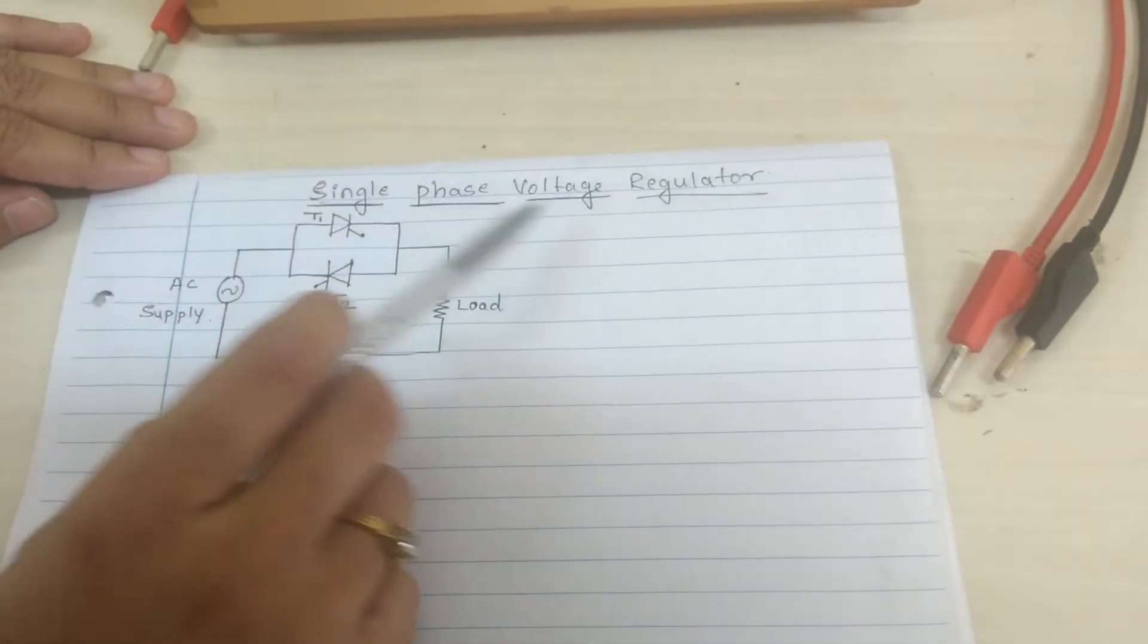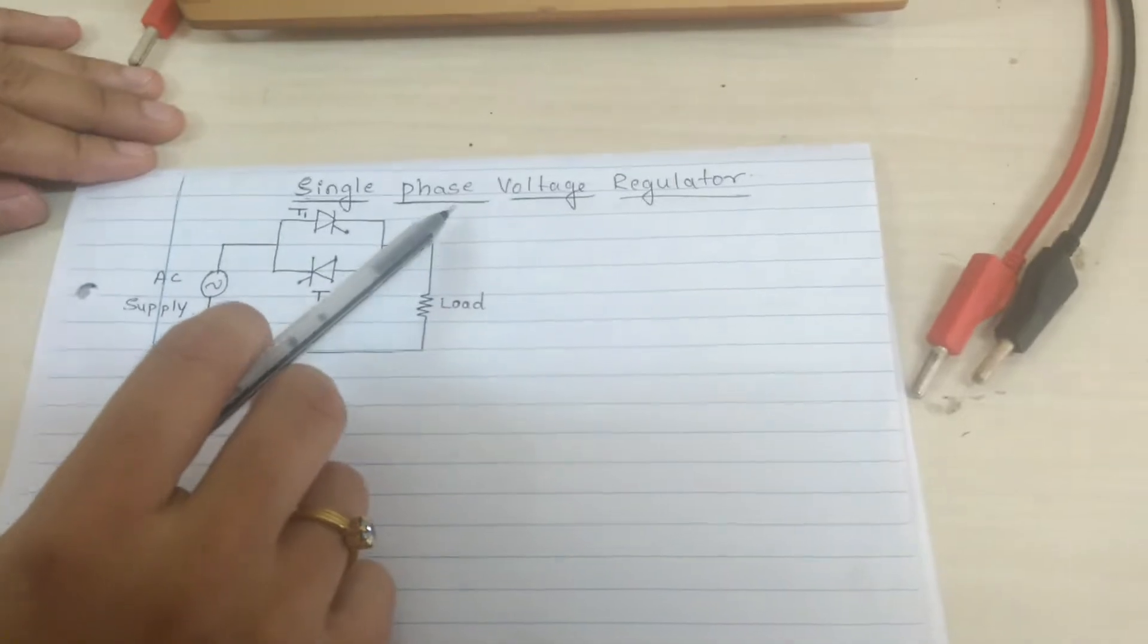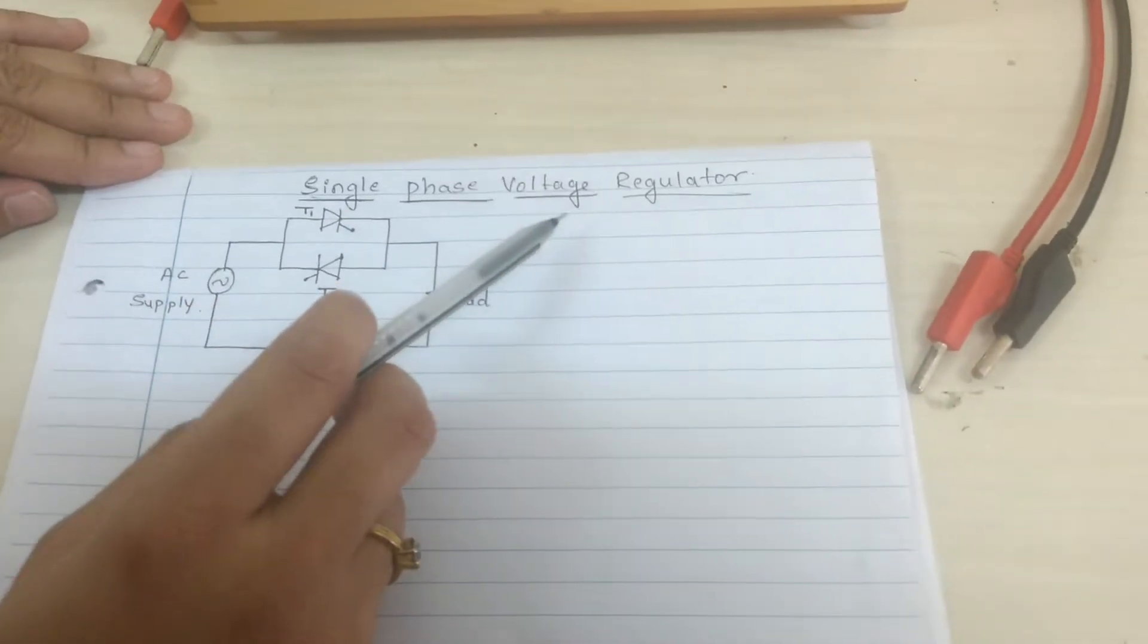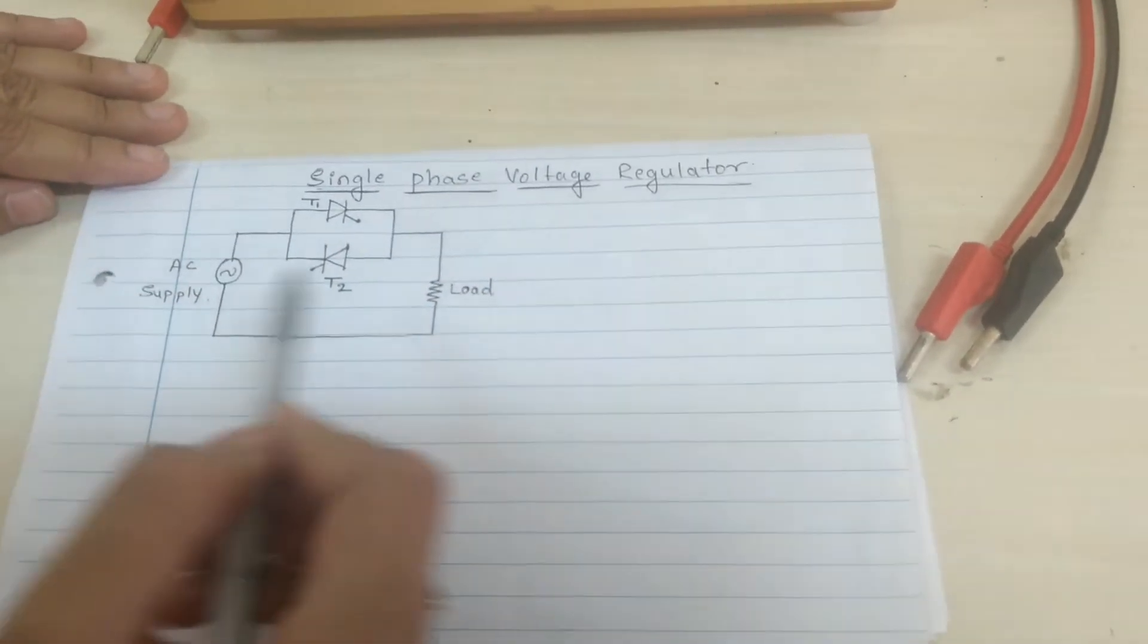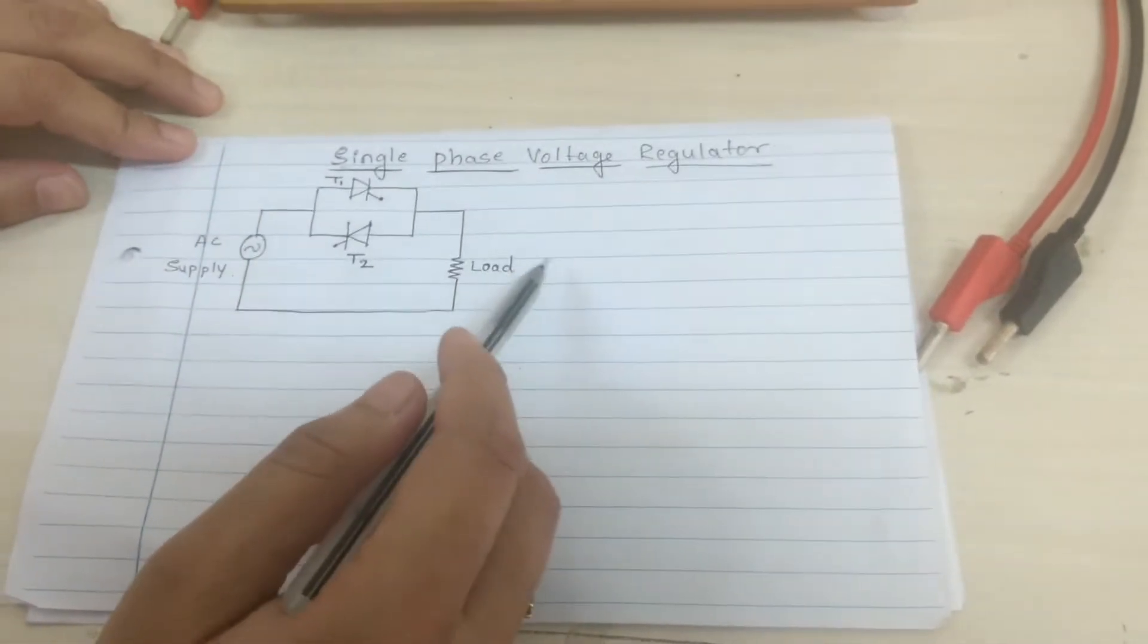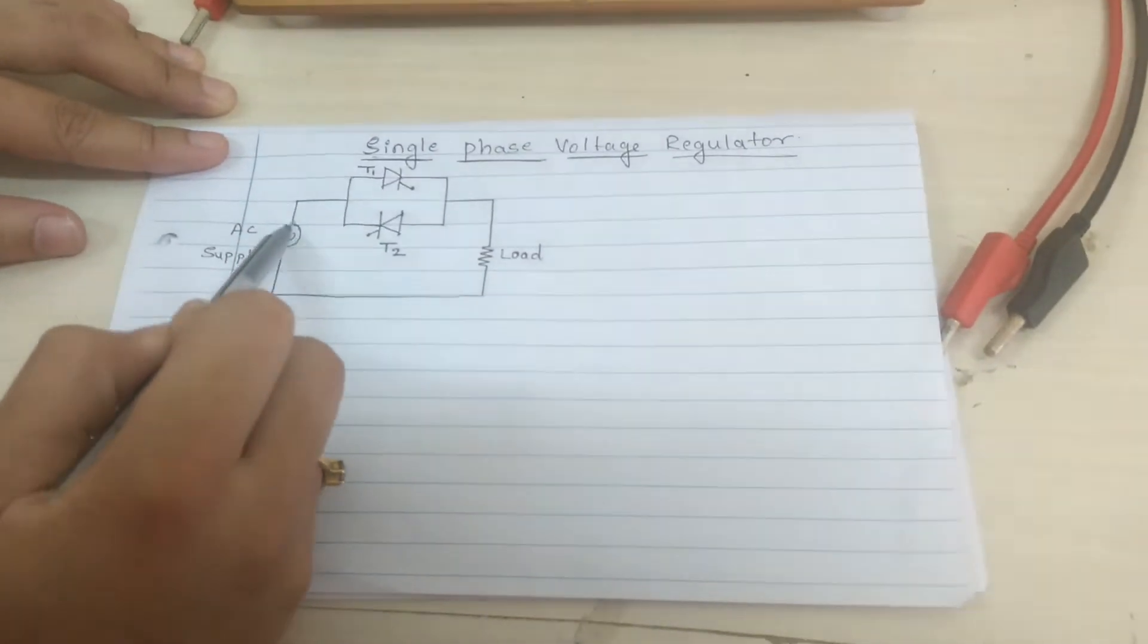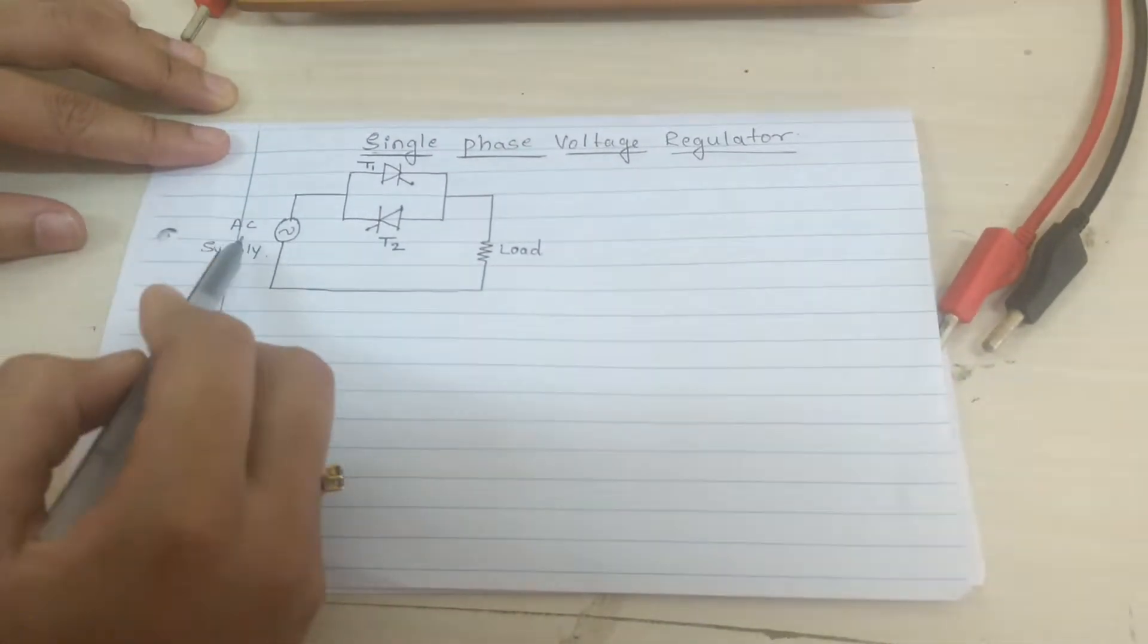The experiment is single phase voltage regulator or voltage control. The main function of this voltage regulator is it converts fixed AC to variable AC. In many applications we need variable AC, but the supplied AC is a fixed one, that is 230 volt.